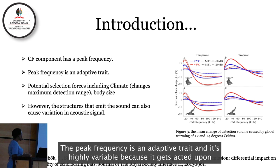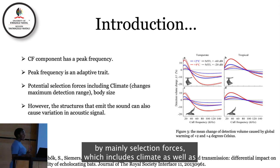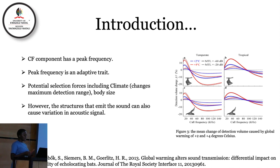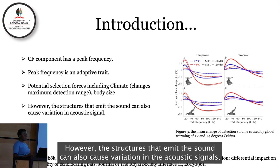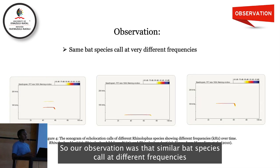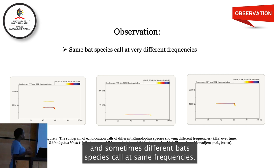The peak frequency is an adaptive trait and is highly variable because it is acted upon by many selection forces, which includes climate as well as body size. However, the structures that emit the sound can also cause variation in the acoustic signals. Our observation was that similar bat species call at different frequencies, and sometimes different bat species call at the same frequencies.